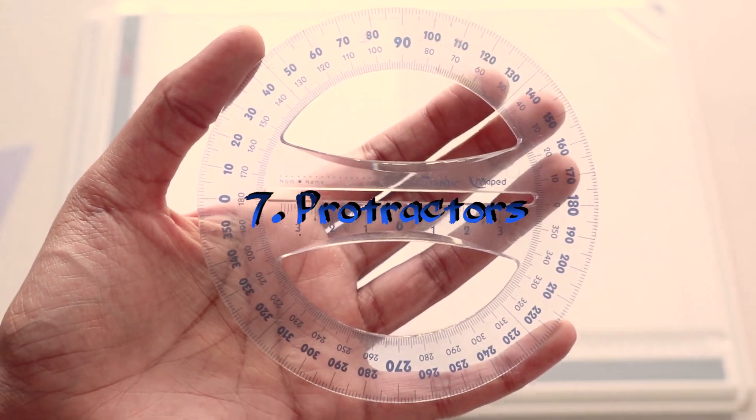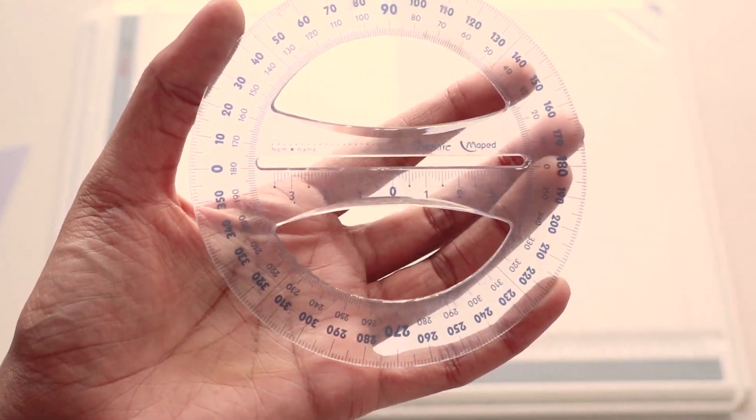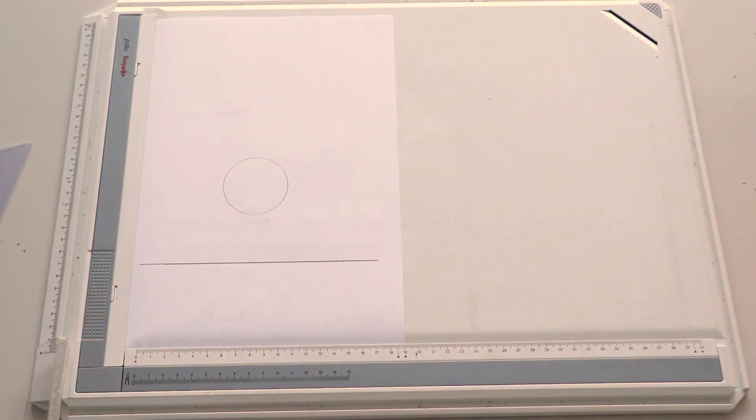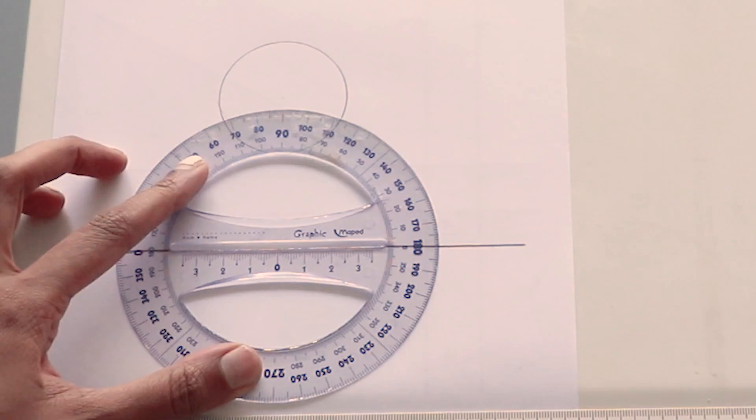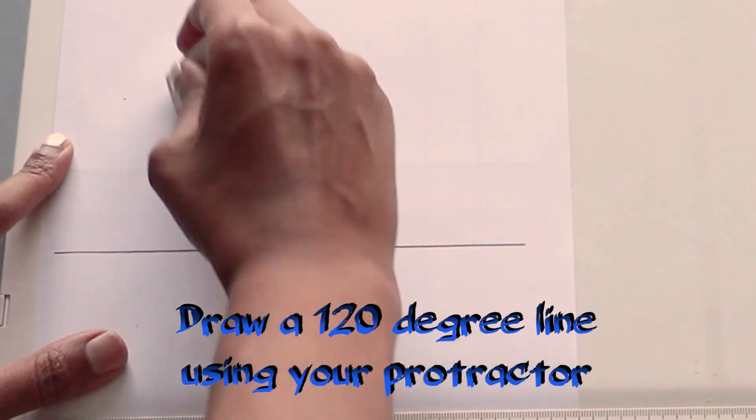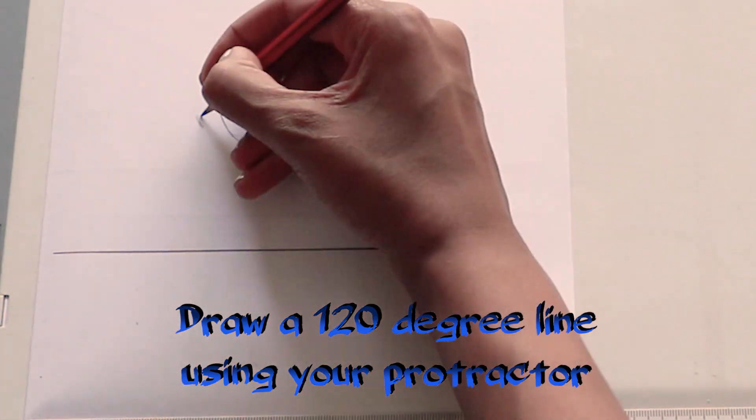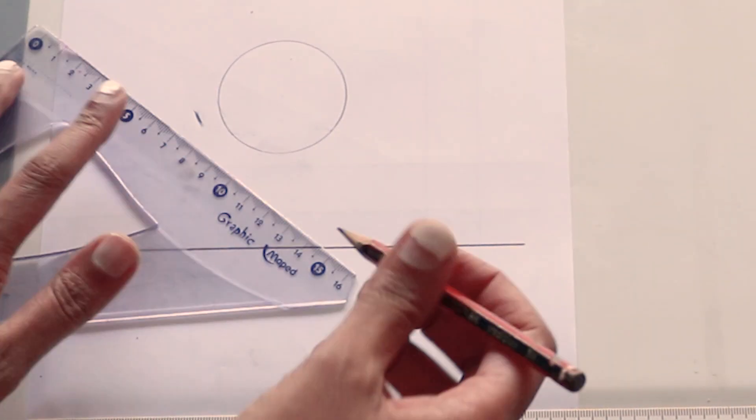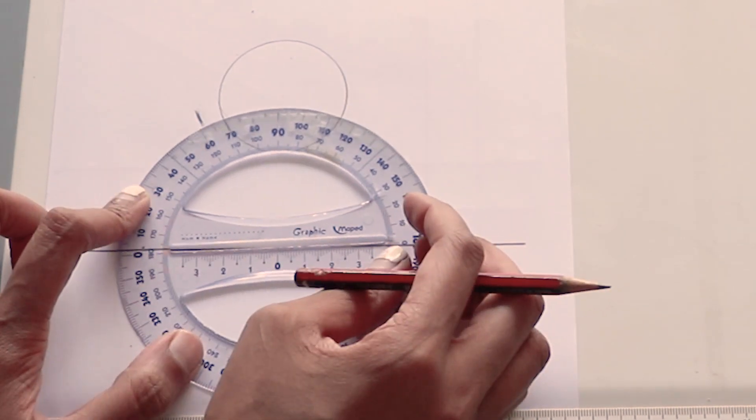Protractors can be used to measure any angle that you wouldn't otherwise be able to achieve with your set squares. Place the protractor's zero point on your reference line and measure from zero to the desired angle. Let's say a hundred and twenty degrees in this case.